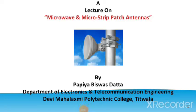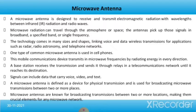Hello everyone. Today I am going to start with the last topic of principles of electronic communication, that is microwave and microstrip patch antennas. First we will go through the basic concepts of microwave antenna. A microwave antenna is designed to receive and transmit electromagnetic radiation with wavelengths between infrared radiation and radio waves. Microwave radiation can travel through the atmosphere or space, and the antennas pick up those signals in broadband, a specified band, or single frequency. The technology comes in many sizes and shapes, linking voice and data wireless transmissions for applications such as radar, radio astronomy, and telephone networks.